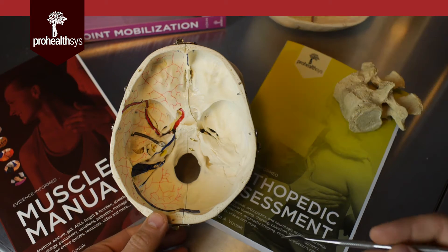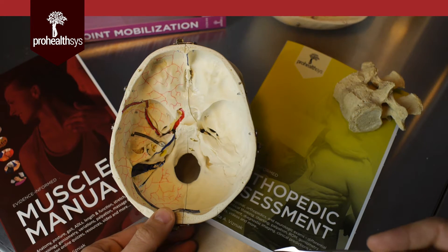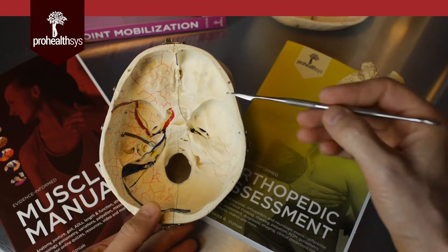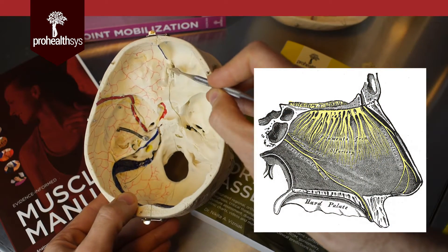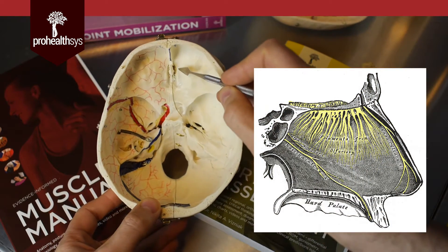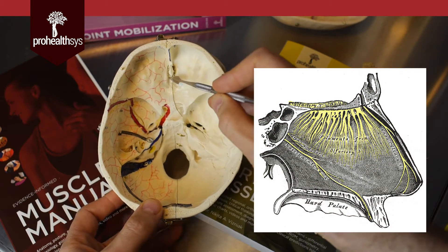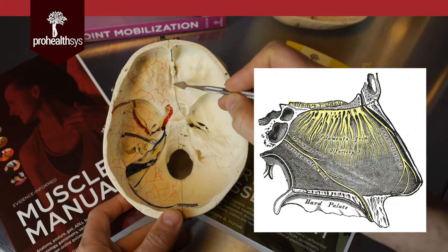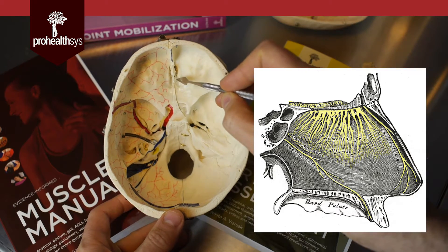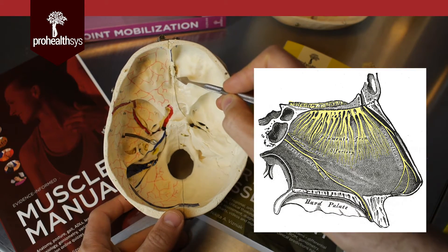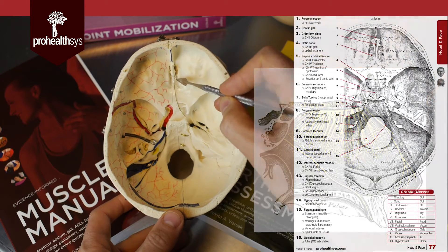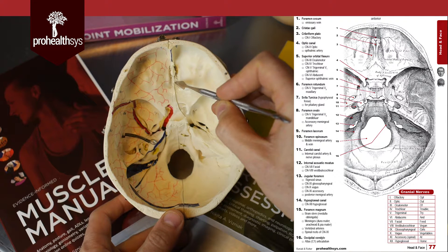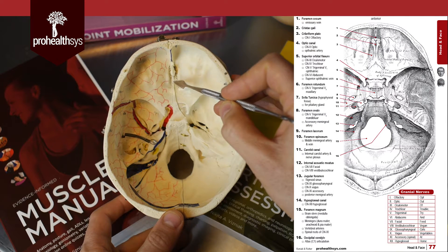A couple of key things for basic orientation. Right here we can see the crista galli in the center, and the cribriform plate to either side. That cribriform plate has little foramen in it for the olfactory nerve — these are olfactory foramen in the cribriform plate. That's cranial nerve number one.